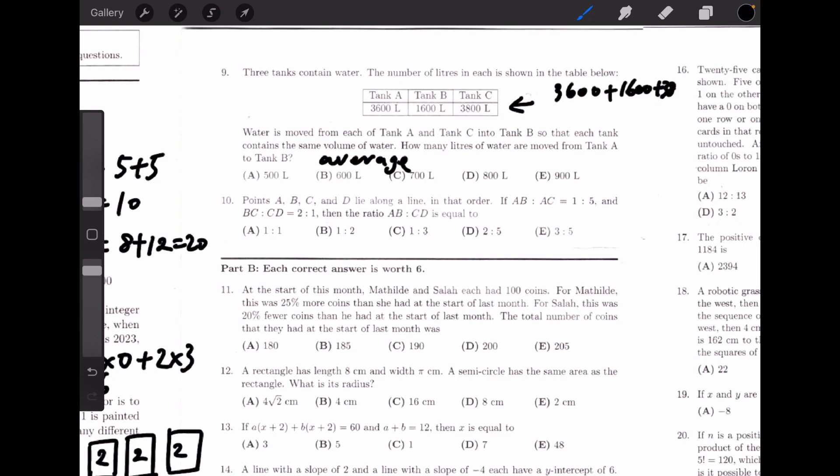We can calculate the average by using the total amount of water divided by the number of tanks, which would be 3,600 plus 1,600 plus 3,800 divided by 3. This would be 9,000 divided by 3, which is 3,000. Because there are 3,600 liters originally in tank A, 600 liters would be moved to tank B, and the answer would be B.